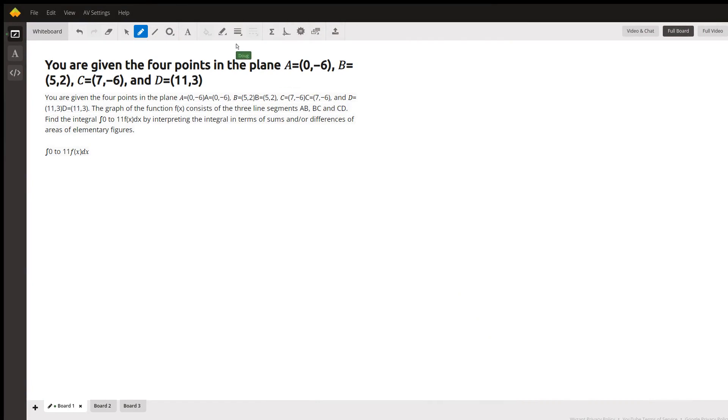Okay, you're given four points in a Cartesian coordinate plane, labeled A, B, C, and D, and you're asked to use some geometry to evaluate the definite integral from 0 to 11 of the function created by joining A with B, B with C, and C with D. So the first thing to do would be to draw a diagram.